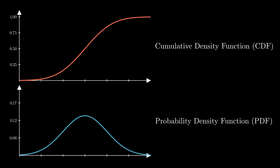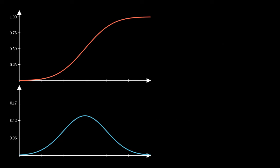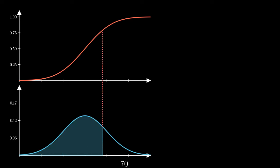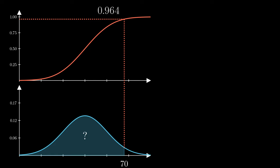Let's say I want to find the area all the way up to x being less than or equal to 70. I can look up that value on the CDF. That given x value will be the input, and then I trace it back to the y-axis on the CDF, and that will give me a value of 0.964.